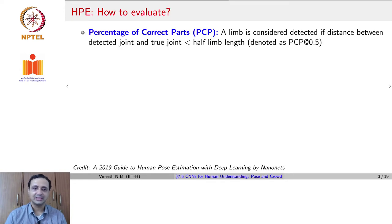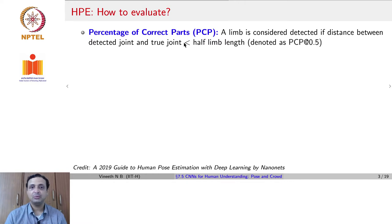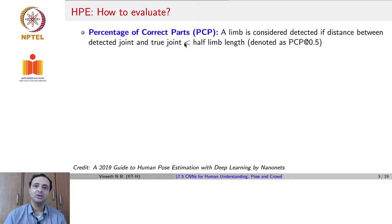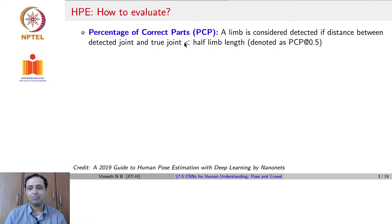Before discussing methods, we ask: how do you evaluate whether the model you developed for human pose estimation is good? There are well-known metrics. PCP — percentage of correct parts — states that a limb is considered detected if the distance between the detected joint and the true joint is less than half the limb's length. This is known as PCP at 0.5; if you considered quarter limb length, it would be PCP at 0.25.